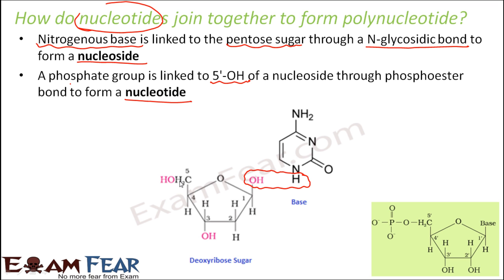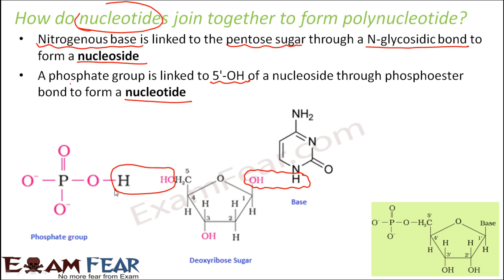With this 5' OH, another bond is formed with the phosphate group. So the phosphate group comes here, and bond formation takes place with this phosphate group. This bond is known as the phosphoester bond. Now why was the earlier bond called glycosidic? Because it was formed with a carbohydrate. Here it is formed with the phosphate group, so the name is phosphoester bond. The bond formation again takes place as a result of condensation — the OH and H are removed and it directly combines with O.